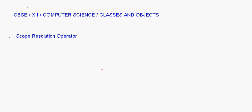Today we are going to do the lesson on classes and objects, and the topic we'll be covering is the scope resolution operator. Let's first try to understand it through an example. I'm going to write a small program here. We start with hash include iostream.h, and here I'm declaring two variables: int a, b.